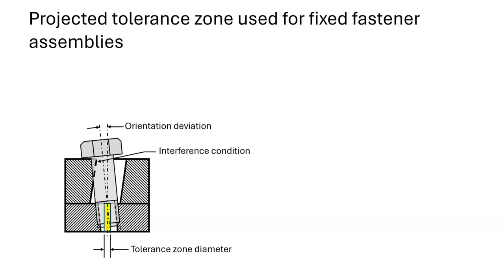If a bolt is threaded into a hole with orientation error, and if the mating part is tall, then a geometric effect will allow the shank of the bolt to interfere with the top of the clearance hole.